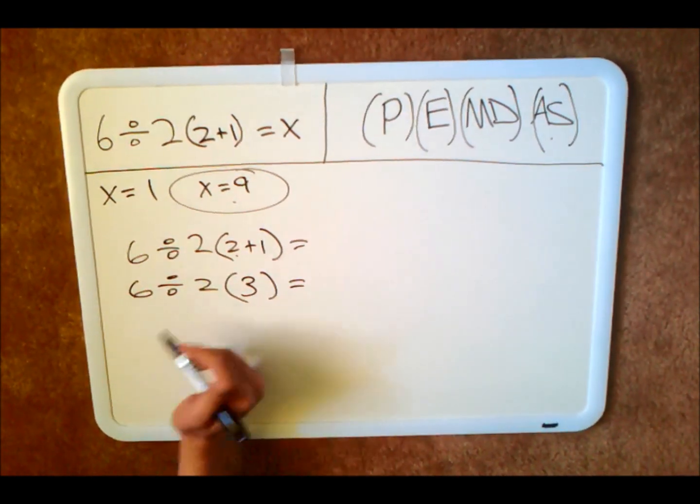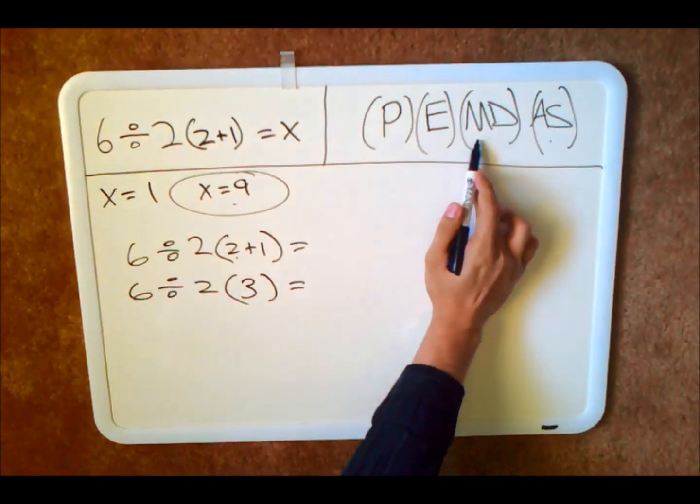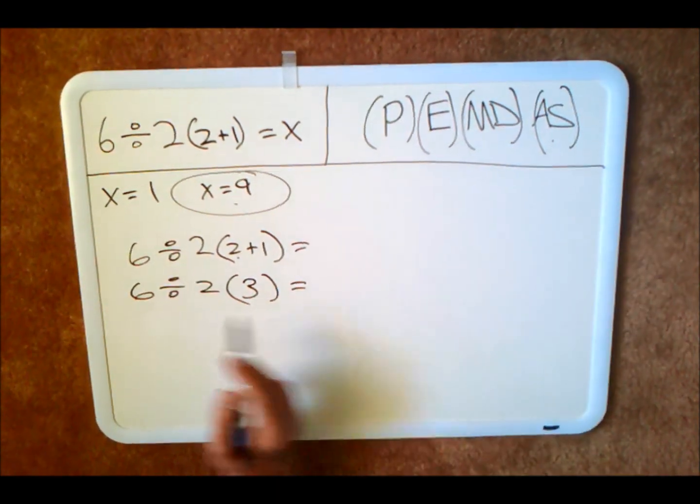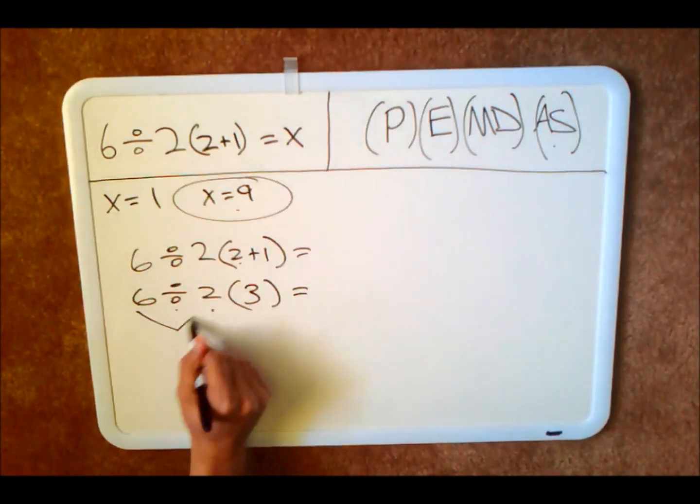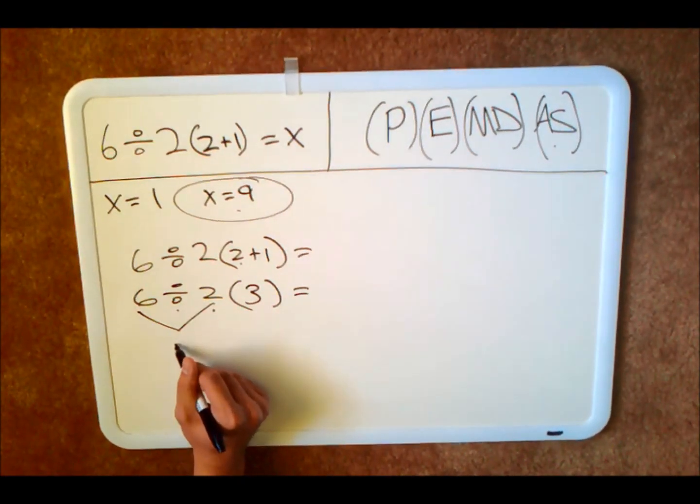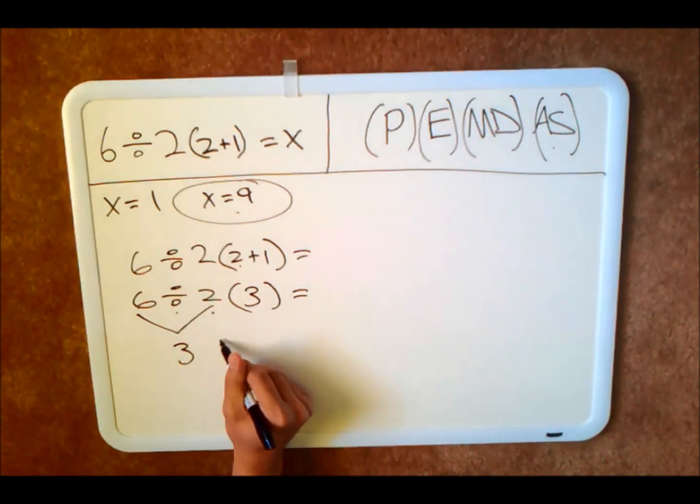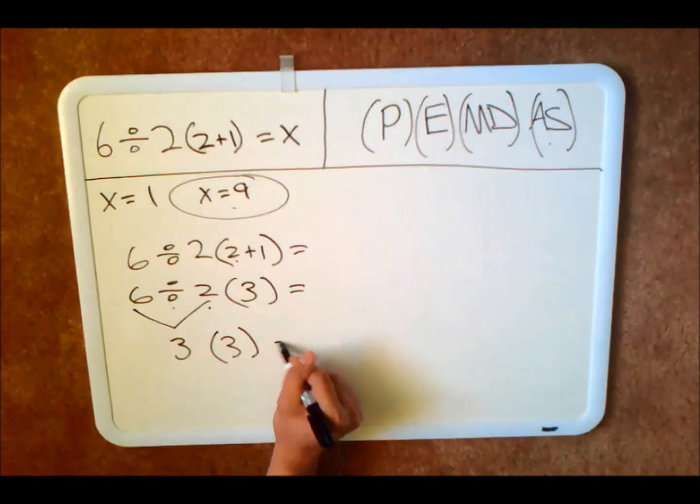The next step, of course, is whatever comes first, multiplication or division, from left to right. So going from left to right, 6 divided by 2. So you take 6 divided by 2 and you get 3. What's left is open parenthesis 3 close parenthesis.